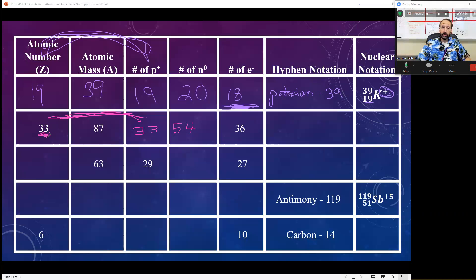So I'm going to write arsenic. A-R-S-E-N-I-C. And the mass is 87. Now I'm going to write the nuclear notation. Arsenic is AS, not AR - that's argon. AS is arsenic. The mass is 87 and my atomic number is 33.